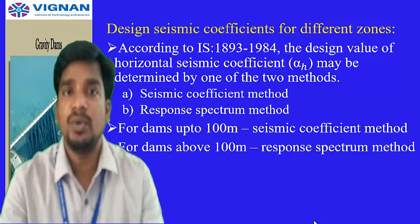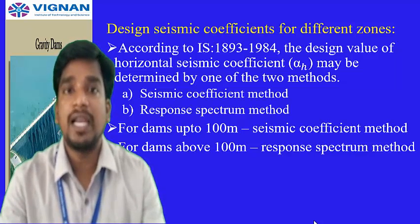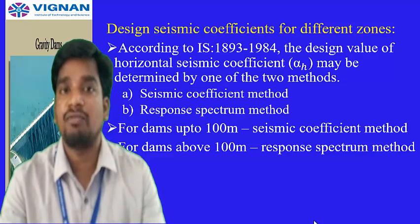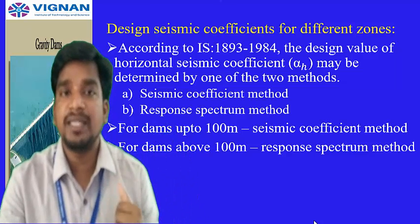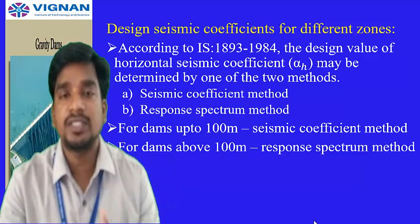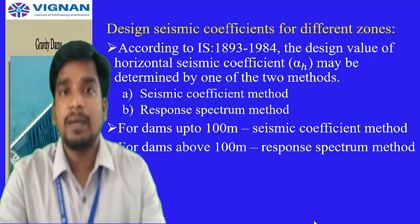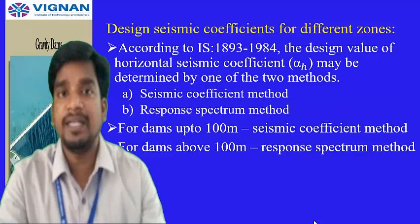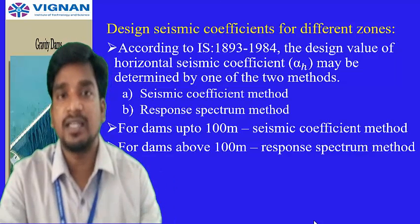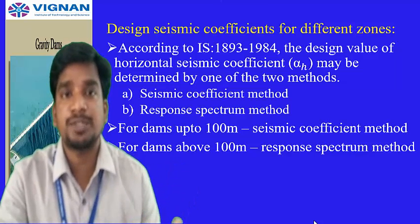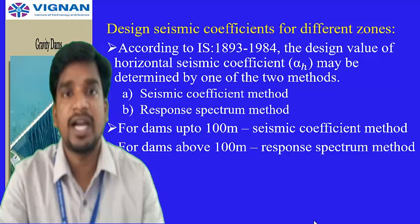The seismic coefficient is categorized into two components: the horizontal seismic coefficient (alpha_h) and the vertical seismic coefficient. There are two methods to determine alpha_h: the seismic coefficient method and the response spectrum method. For dams up to 100 meters in height, the seismic coefficient method is suitable. For dams above 100 meters, the response spectrum method is used. The method is selected based on the height of the gravity dam.